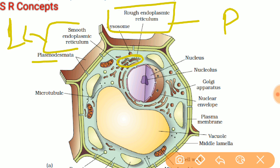Another structure is plasmodesmata. These are the protoplasmic connections between adjacent cells. The cell membrane of one cell is connected to the cell membrane of the adjacent cell, and in between there is cytoplasm. So the cytoplasmic connections between two plant cells are called plasmodesmata. Through these connections, two cells can exchange materials and communicate with each other.